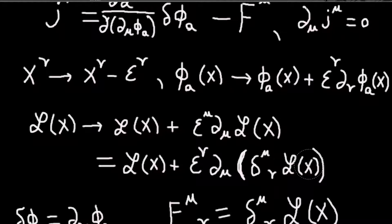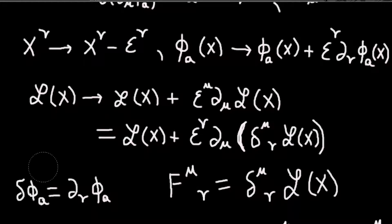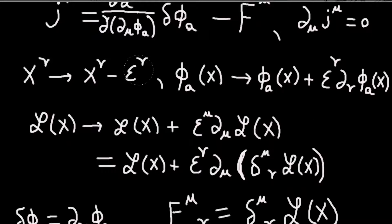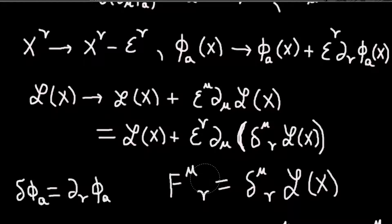And we can just read off f mu will be delta mu nu of the Lagrangian. Sorry, delta mu nu times the Lagrangian. So our delta phi is this. And we will have f mu... So there's again, four different variations we're doing. So this f mu nu becomes kind of a tensor.